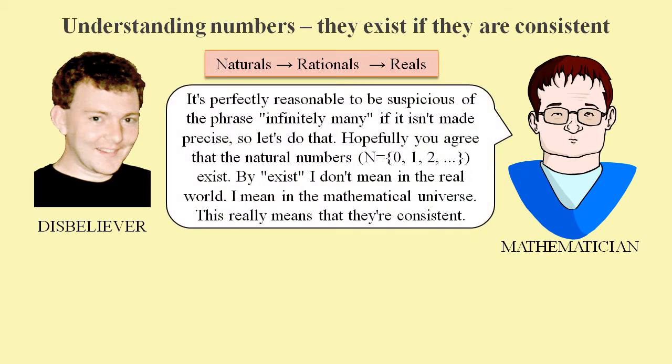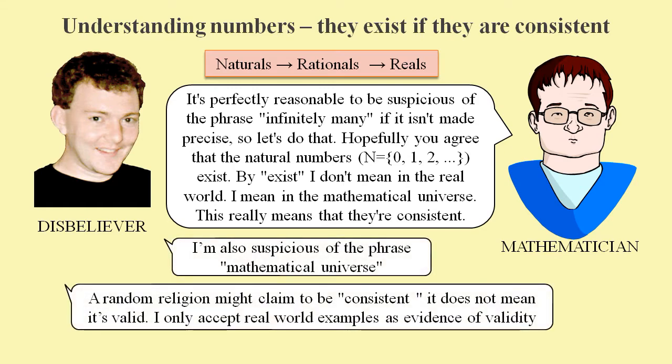Mathematicians can appear slippery where existence is concerned. When they say that all natural numbers exist, it simply means that the concept of infinitely many of them does not lead to any inconsistencies. They'll keep telling us it's all about consistency, and we keep telling them that that makes no sense.